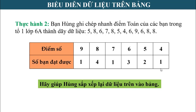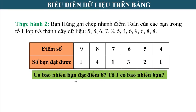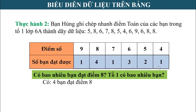Vậy là chúng ta đã sắp xếp xong dữ liệu vào bảng. Các bạn quan sát bảng vừa lập được, cho cô biết có bao nhiêu bạn đạt điểm 8 và tổ 1 có bao nhiêu bạn. Số bạn đạt điểm 8 là 4. Muốn biết tổ 1 có bao nhiêu bạn, ta tính tổng: 1 + 4 + 1 + 3 + 2 + 1 = 12 bạn. Vậy tổ 1 có 12 bạn.